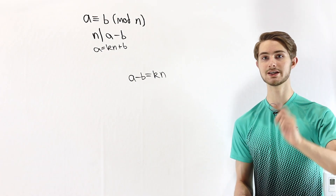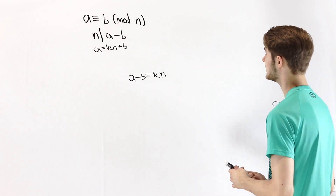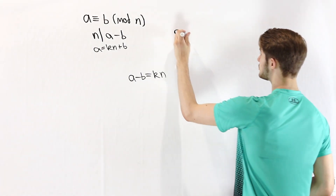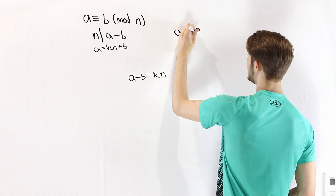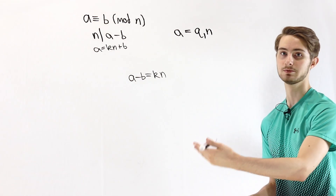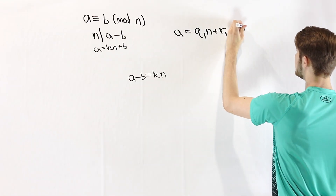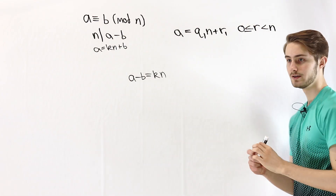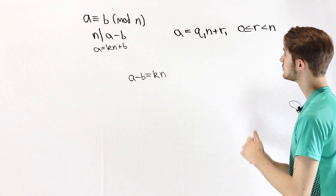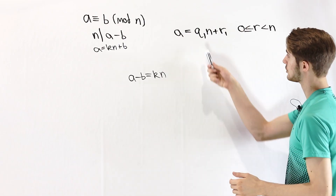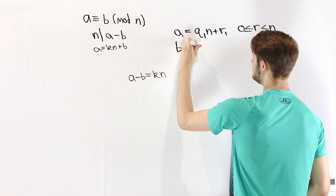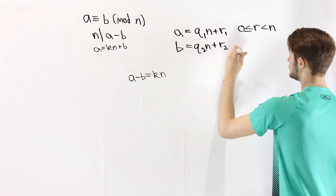If you haven't heard of the division algorithm, I've left a link in the description. The idea is: if we take A and divide it by N — thinking about long division from primary school — we get a quotient Q1, a whole number from A over N, and a remainder R1 less than N. R1 must be between 0 and N because if it were bigger than N, we could include it in the quotient. So any whole number A can be expressed as Q1 times N plus R1. Similarly, B equals Q2 times N plus R2, where R2 is also less than N.